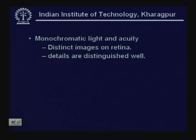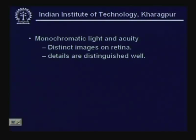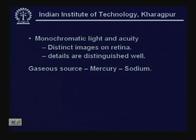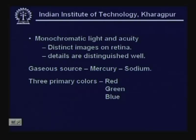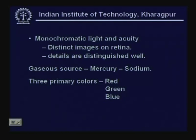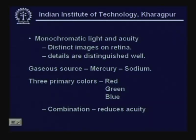The eyes are comfortable and perform best with monochromatic light, forming distinct images on the retina and distinguishing details well. However, monochromatic light is obtained from physical processes like electroluminescence used in gas sources such as mercury or sodium lamps. Fluorescent lamps are low-pressure mercury vapour lamps. The three primary colours — red, green, and blue — mixed in particular proportions can give rise to all necessary colours. However, since the eye has good acuity for monochromatic light, a combination of colours tends to reduce acuity.